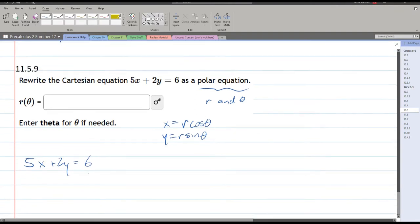We're going to take out the x first, so replace x by r cos theta, plus 2, y is r sine theta, 6 on the other side.